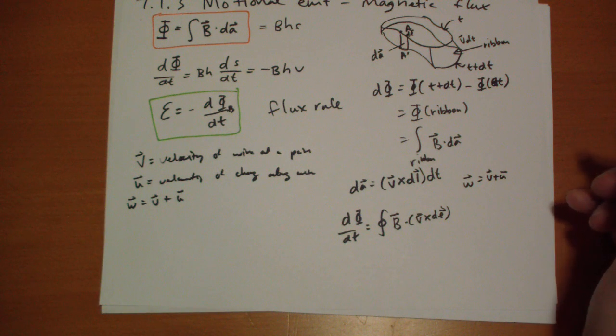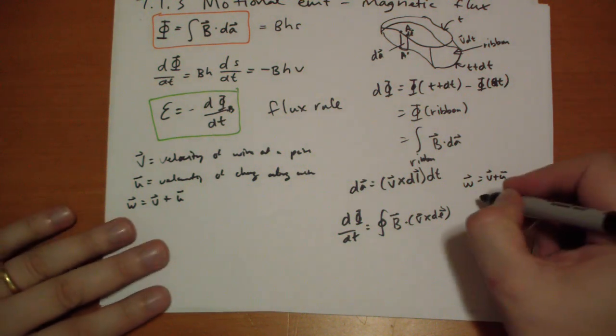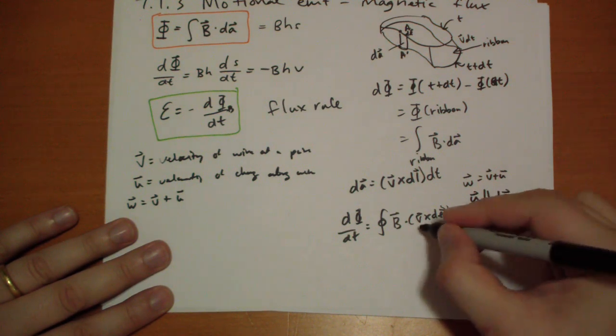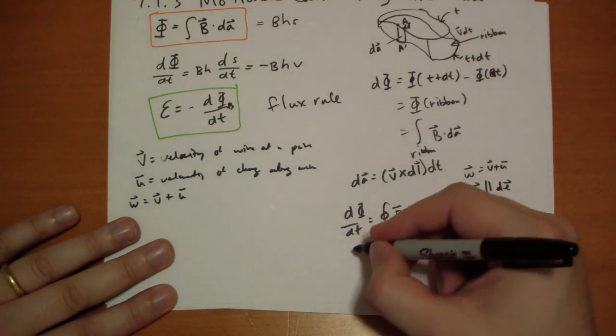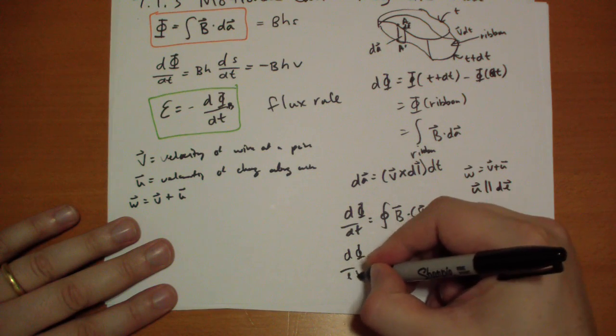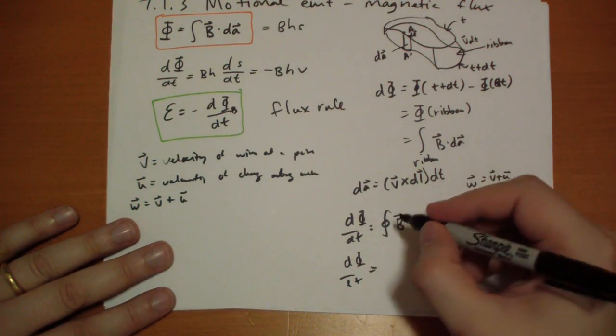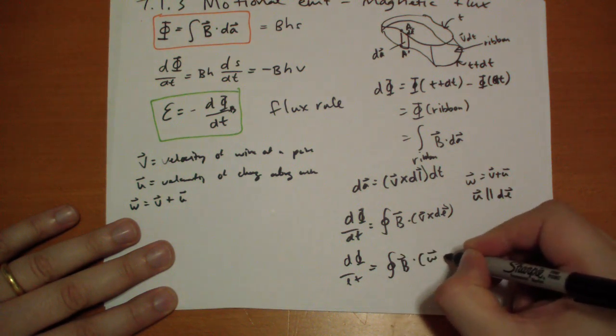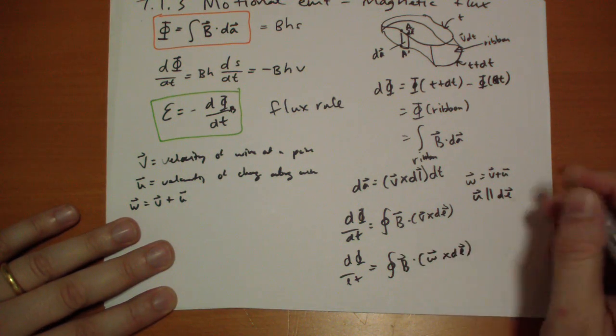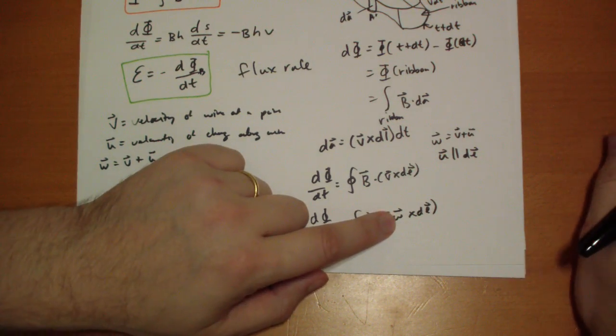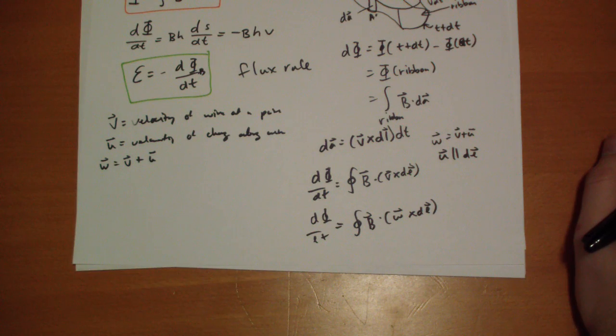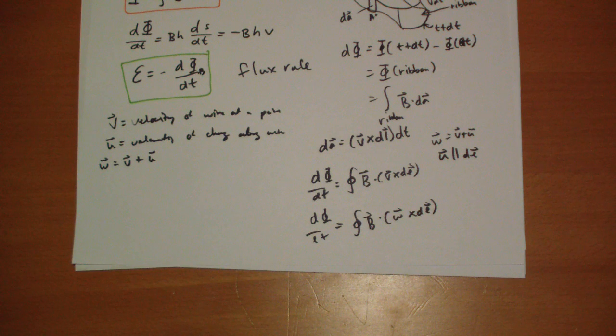Let's substitute in W equals V plus U. And we'll note that since U is parallel to DL vector, the cross product of the U is going to be zero. So we can rewrite this as D phi by DT equals. So what we did is we added the U in, but we know that U cross DL is going to be equal to zero. But we're going to take advantage of this in a minute.